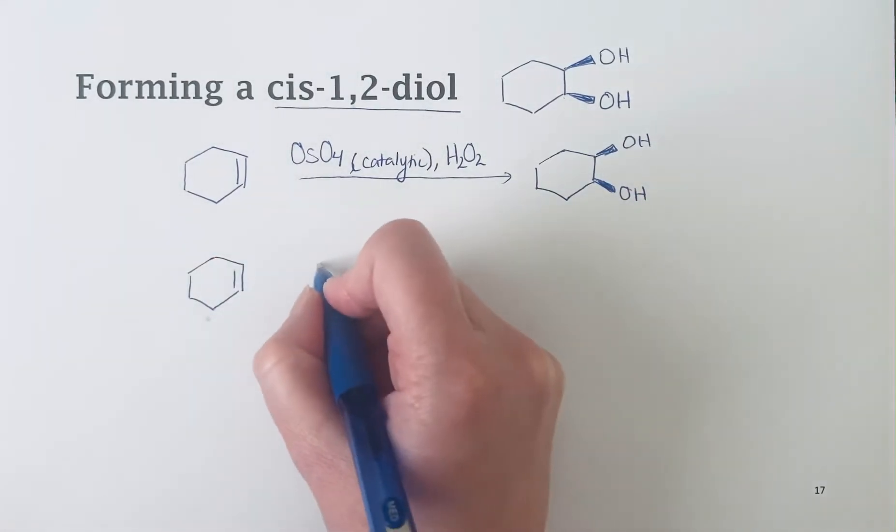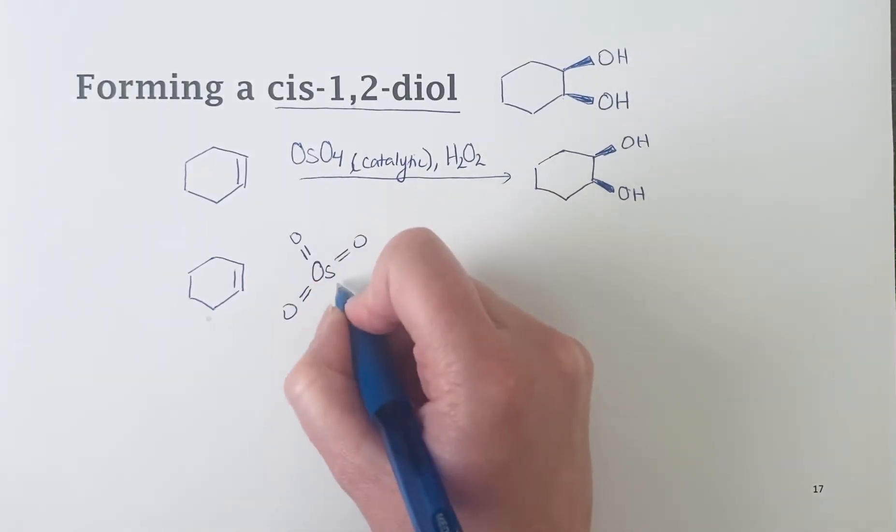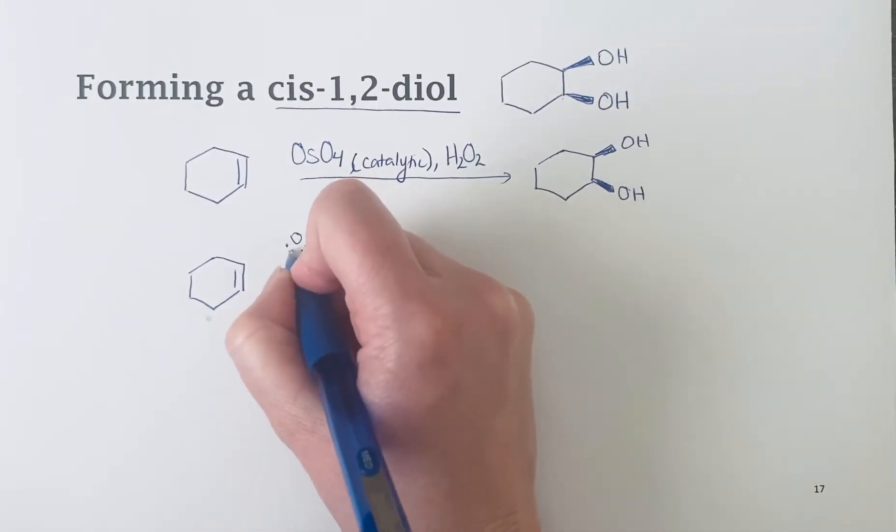We have an alkene. Osmium tetroxide looks like this. You've got the osmium with all of these oxygens.